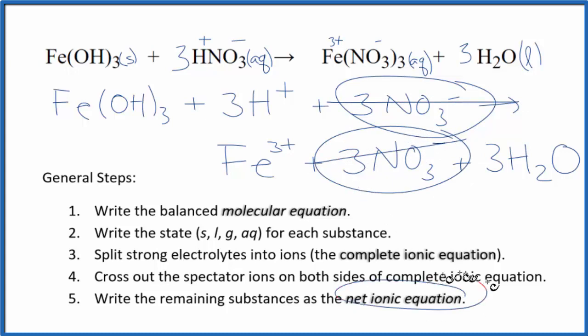And what's left will be the net ionic equation for Fe(OH)₃ plus HNO₃. I'll clean this up and add the states in, and we'll have our net ionic equation.